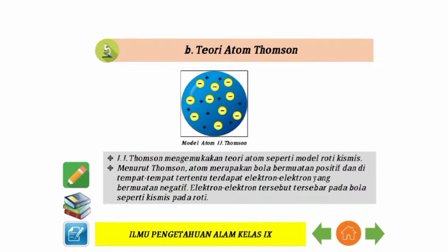Teori atom Thomson: J. Thomson mengemukakan teori atom seperti model roti kismis. Menurut Thomson, atom merupakan bola bermuatan positif dan di tempat-tempat tertentu terdapat elektron-elektron yang bermuatan negatif. Elektron-elektron tersebut tersebar pada bola seperti kismis pada roti.